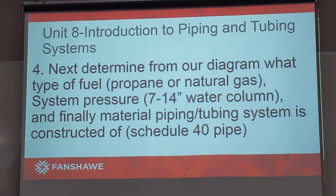We need to determine which table to use. The first thing we need to determine is what type of fuel we're using — propane or natural gas. Next, the system pressure; in this case we're looking at 7 to 14 inches water column of natural gas. And finally, what material the piping or tubing system is constructed of. In this particular case, the whole example is constructed of schedule 40 pipe.